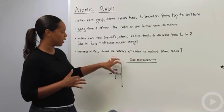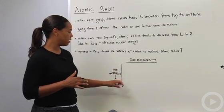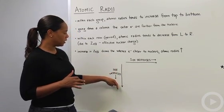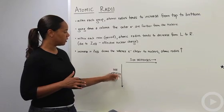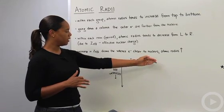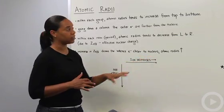So this is just a depiction again of the periodic table. Pretend this is it. So as you go down the columns, the atomic radius increases. And as you go over to the right, the size of the atomic radius decreases.